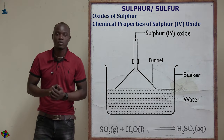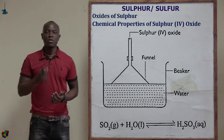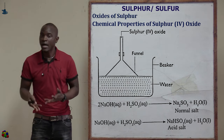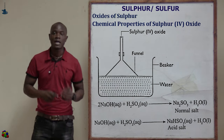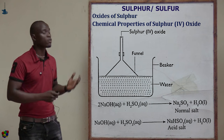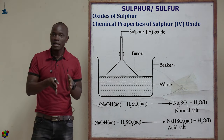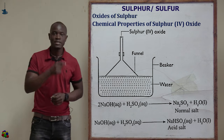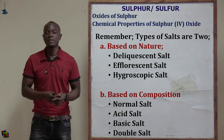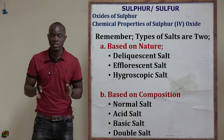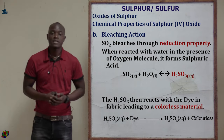When sulfur(IV) oxide reacts with water in an equilibrium reaction, we get sulfurous acid in aqueous form. When this acid reacts with sodium hydroxide, it forms a normal salt and an acid salt. Acid salts are salts which contain a replaceable hydrogen atom — for example, sodium hydrogen carbonate, potassium hydrogen carbonate, and calcium hydrogen carbonate.